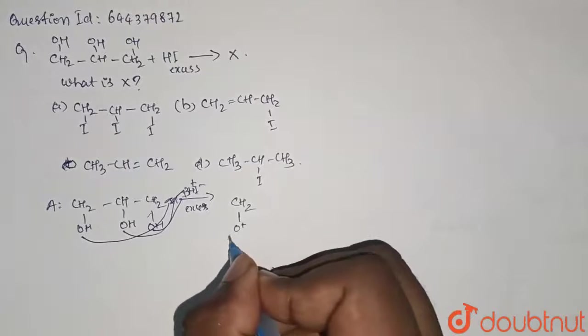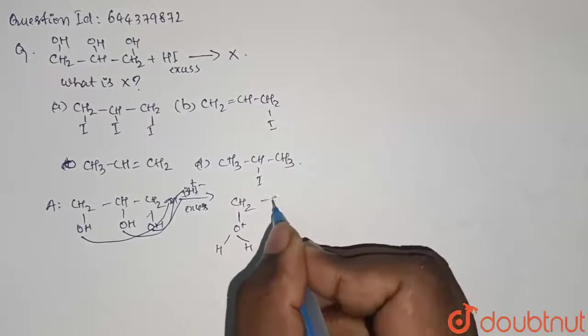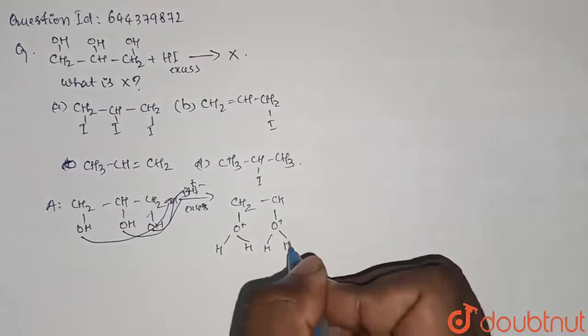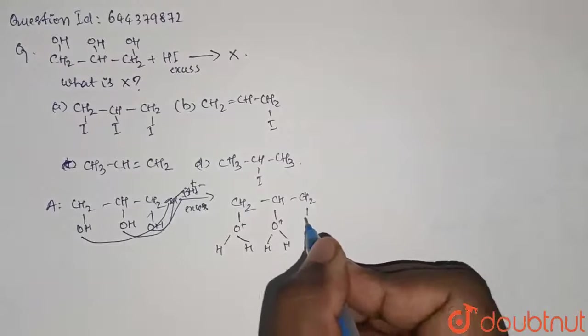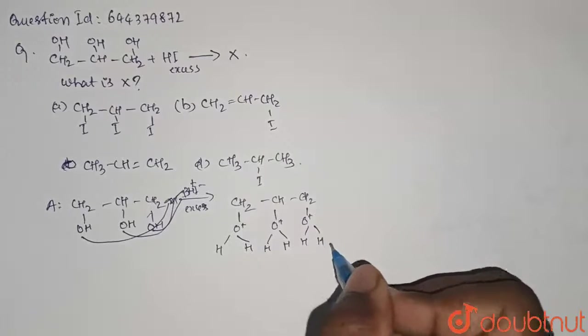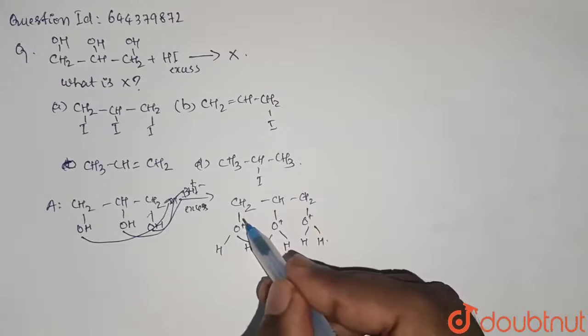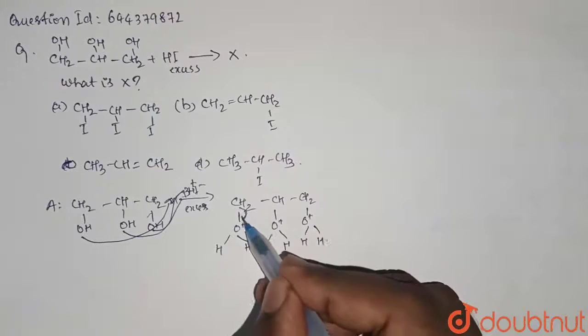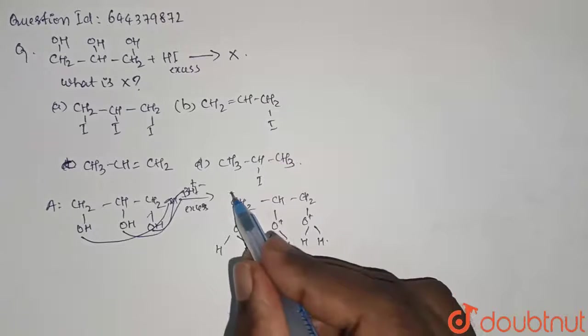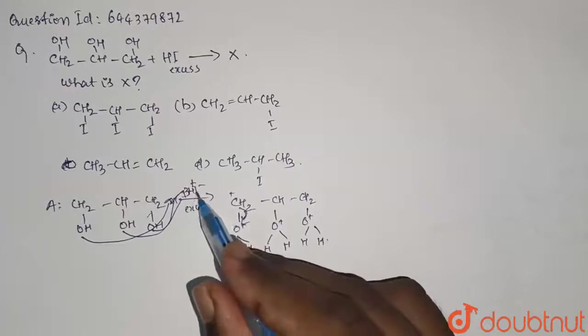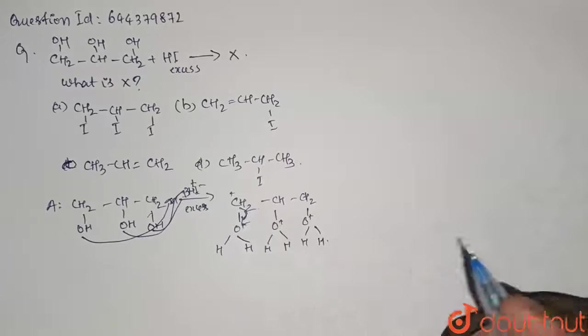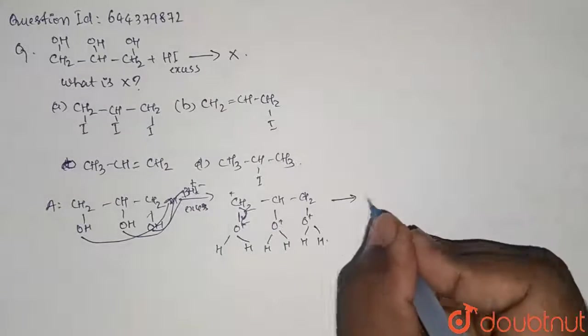We get CH2OH2 plus, CH-OH2 plus, and CH2OH2 plus. Here, what is going to happen? The oxygen will draw the lone pair from the carbon, so carbon will have a positive charge. Then the I minus, the three I minus here, will attack each and every C plus.